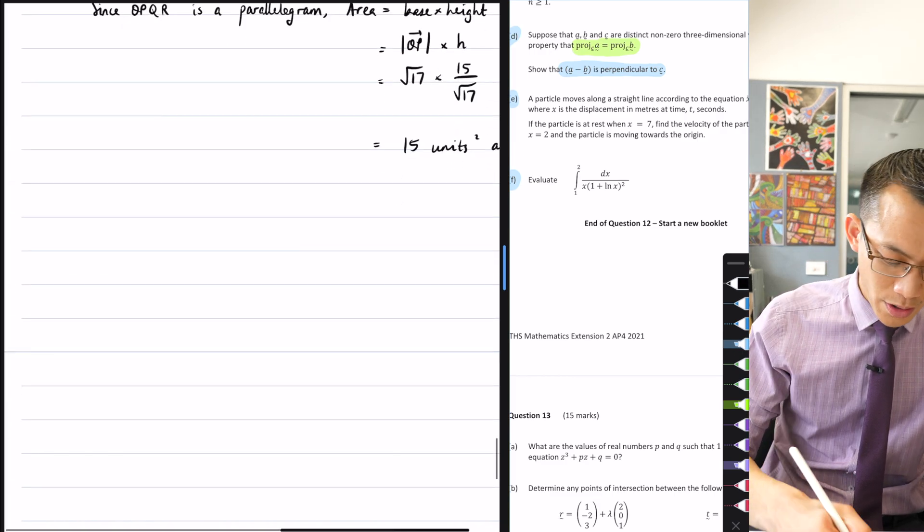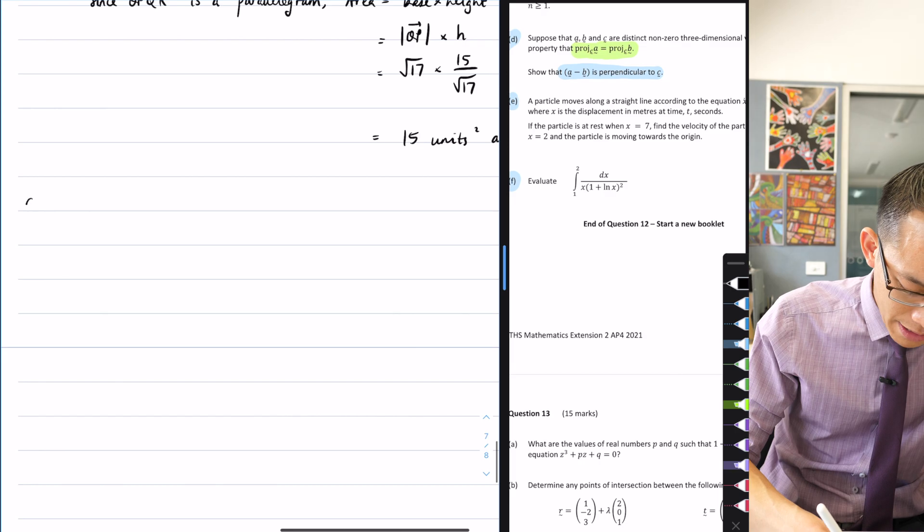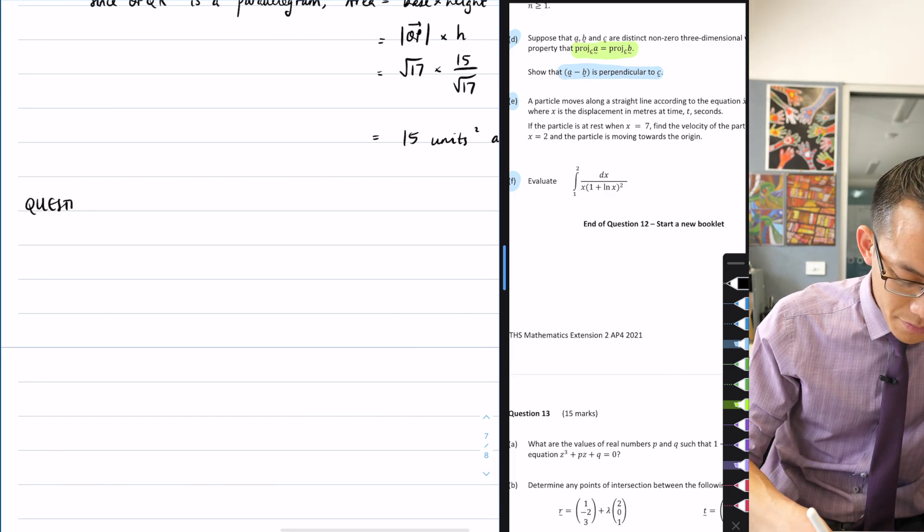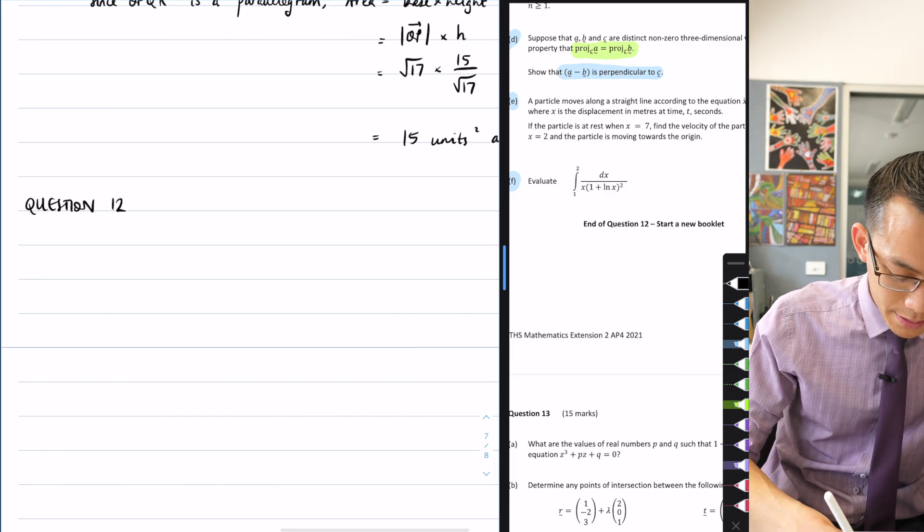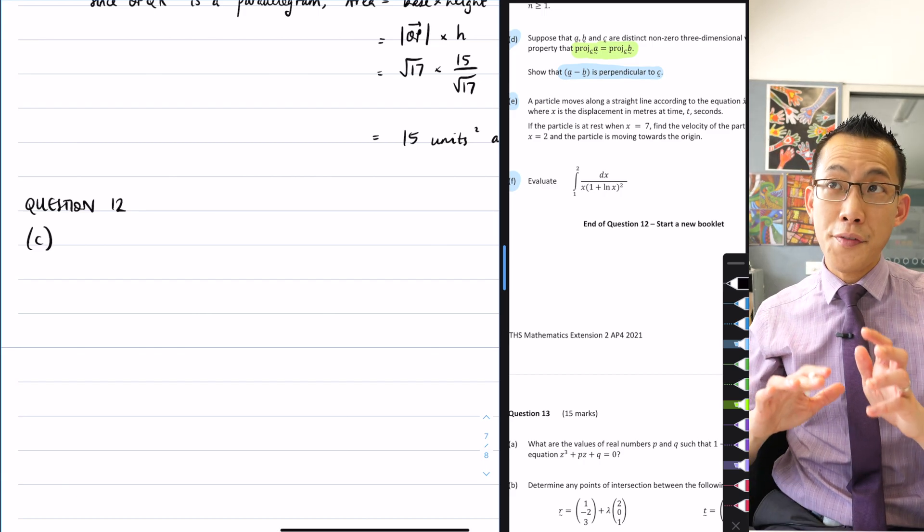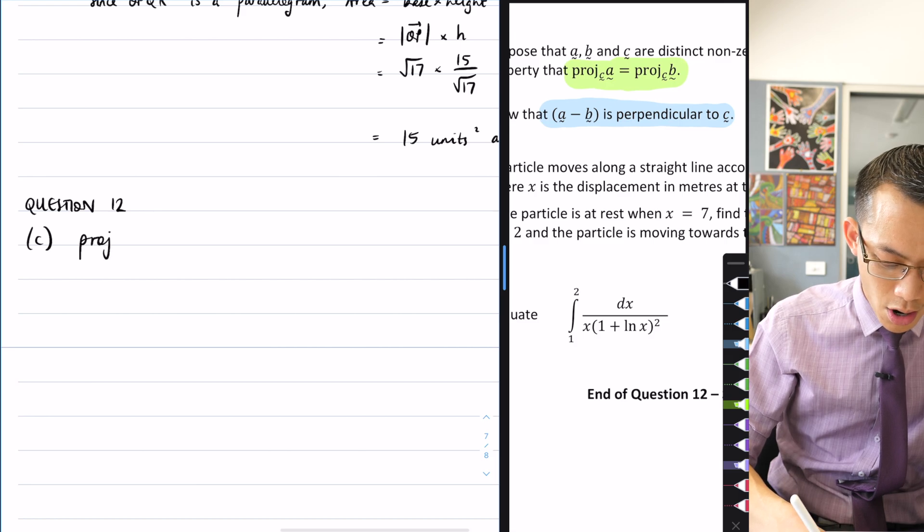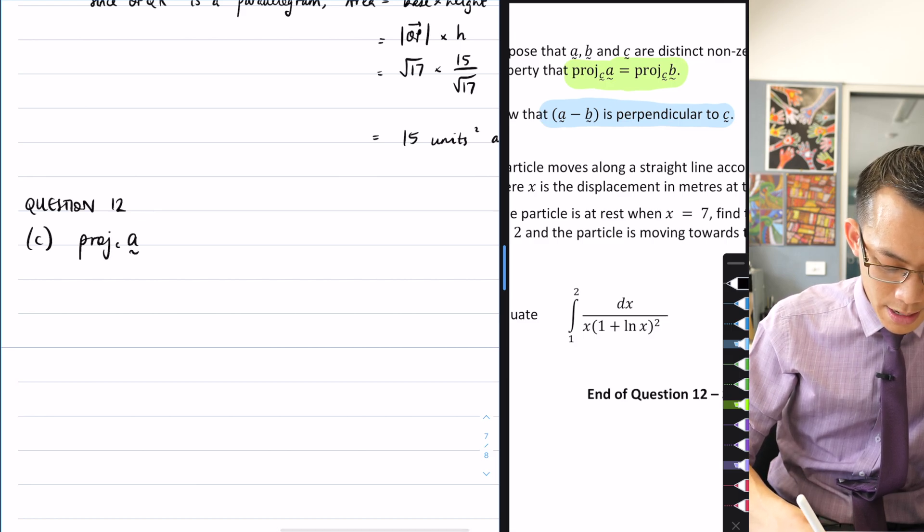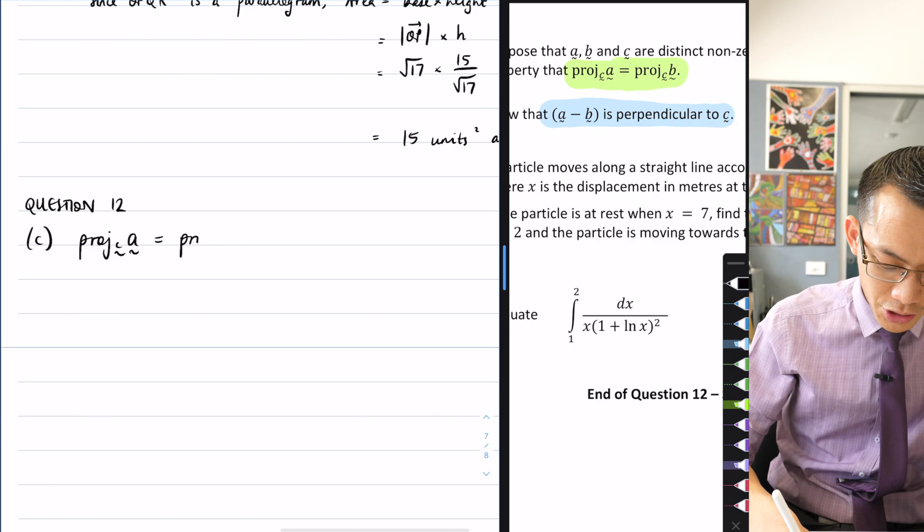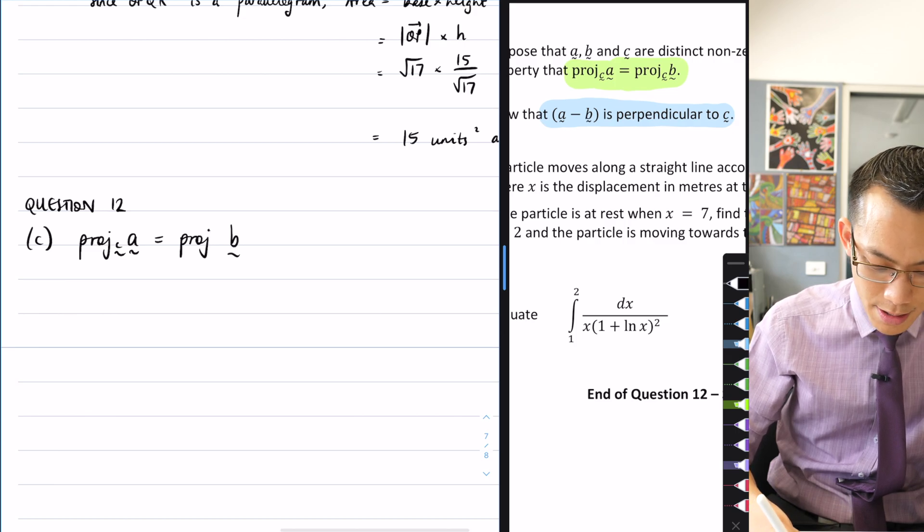So I've moved all the way into question 12, so let's just write that, question 12. And I'm on part C. Now if I can start with this idea that the projections are equal to each other, projection of A onto C is equal to the projection of B onto C.